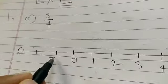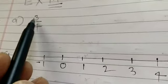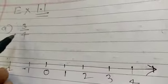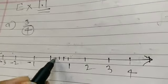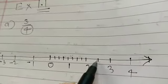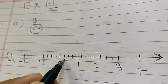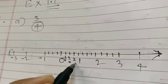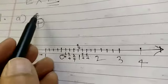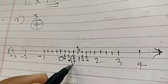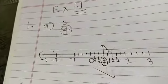On the left, mark minus 1, minus 2, and so on. Since this is a positive number — both the numerator and denominator are positive — and the denominator is 4, you will divide each block into 4 equal parts. So from 0 on the positive side: 1 by 4, 2 by 4, 3 by 4, and 1 means 4 by 4. So 3 by 4 is located at the third division.